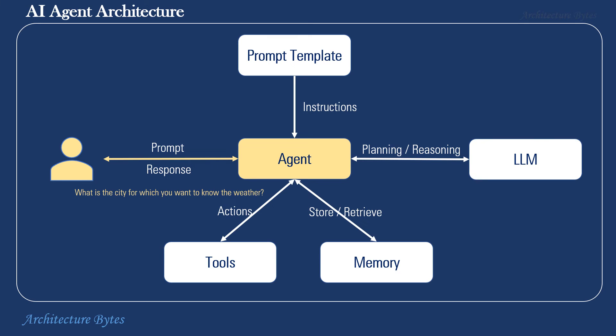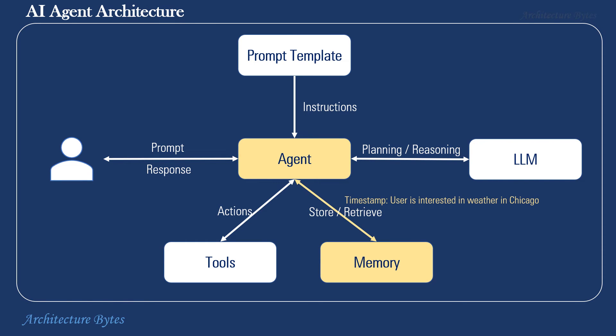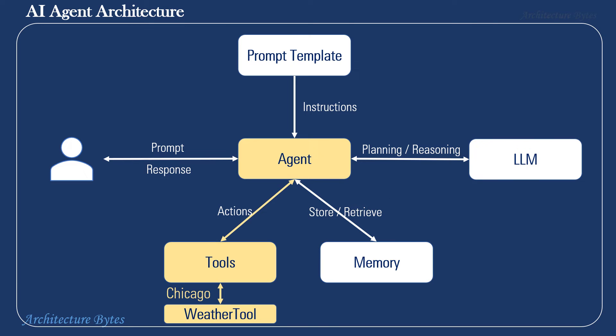This question is posed to the user by the agent. The user responds with the city name Chicago. At this point, the agent may choose to store this information in memory — that is, the user is interested in weather in Chicago — and then it invokes the weather tool with city as the parameter. Note that the interface and protocol for invoking the tool was made available to the agent during its setup. The tool responds with a temperature value of 67 degrees Fahrenheit.